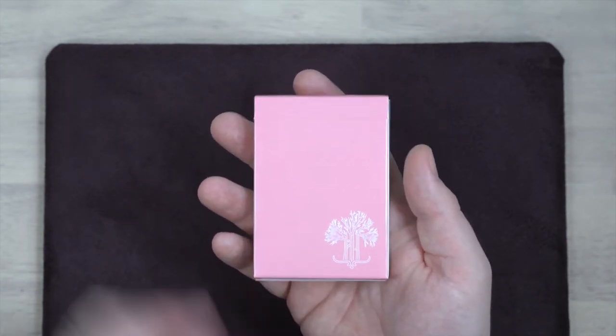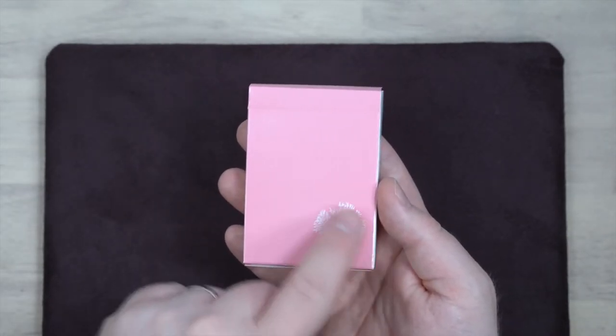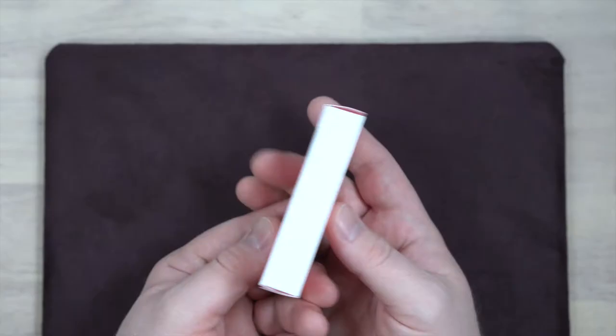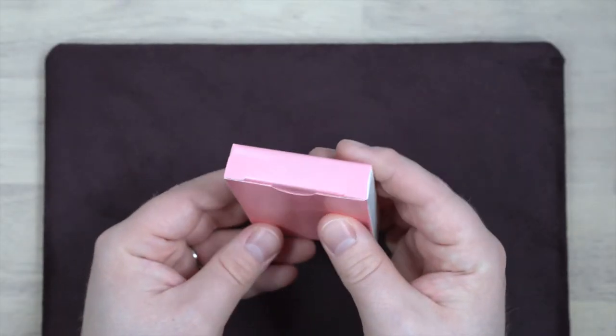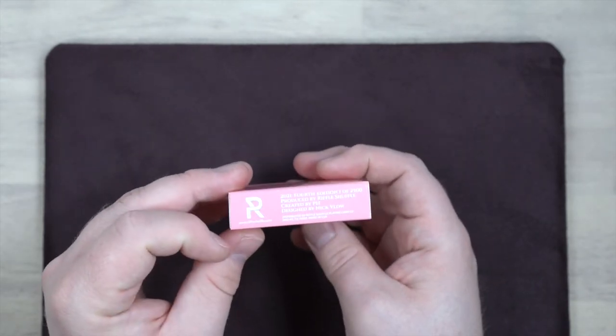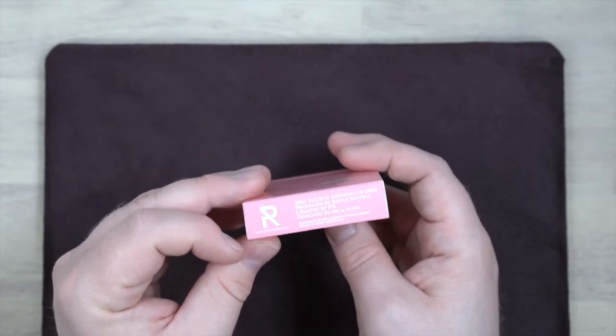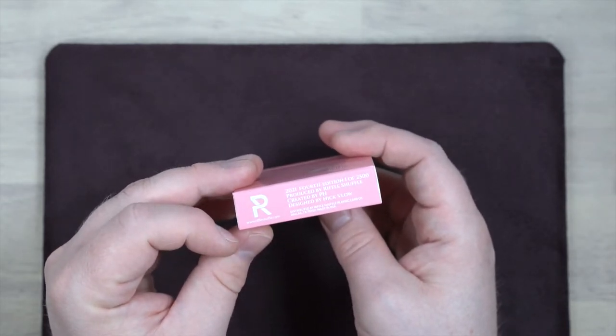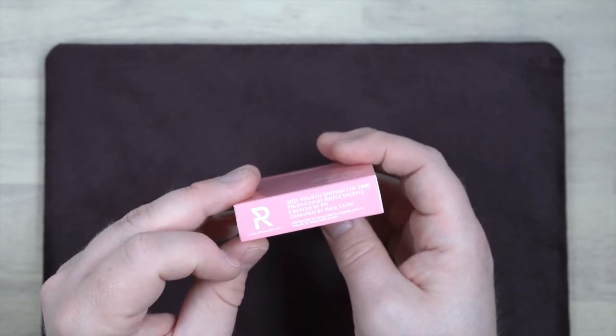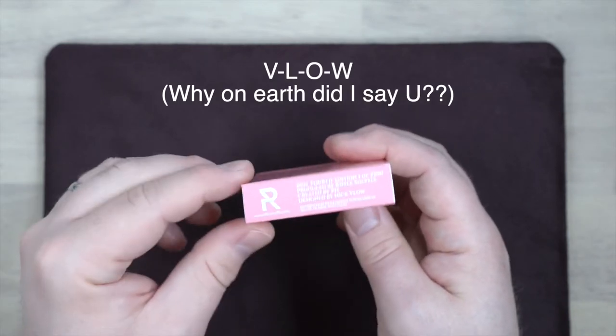This is a fully marked deck. On the tuck, it's very plain and simple. We just have this sort of little tree emblem and then solid pink front, solid white sides, pink top panel, and a bit of info. It was one of 2,500 printed, and this is the fourth edition. I'm not sure off the top of my head what the other colors were. Designed by, I'm sorry, I don't know the pronunciation, whether it's Nick Vlau or Nick Vlow. V-L-U-W. So if somebody knows, leave it in the comments.